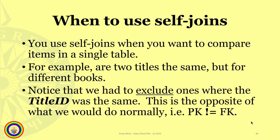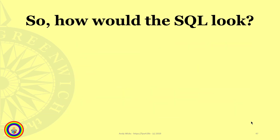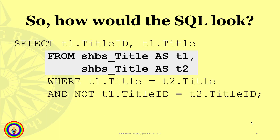Notice that we have to exclude records where the title ID is the same — this is the opposite of what we would do normally. In this case we have to use WHERE the primary key is NOT equal to the foreign key.